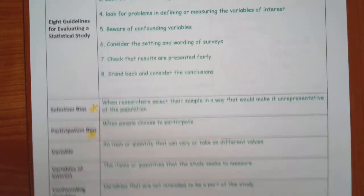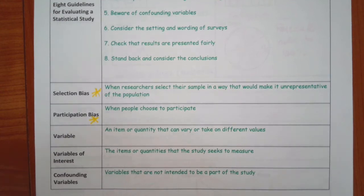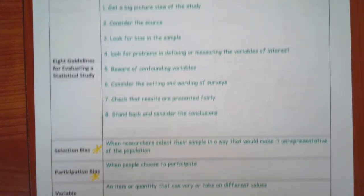So it says in number three, look for bias. And there are two different kinds of bias. Selection bias and participation bias. Selection bias is when they select their sample in a way that would make it unrepresentative of the population. This would be like a convenient sampling. You know, are you just doing the ones that are the easiest? Participation bias is when people choose to participate. A telephone survey. You have to take into account that a lot of people do not want to participate in a telephone survey. And usually it's only those who have really strong opinions. If you don't really care about something, you're not going to waste your time with it.